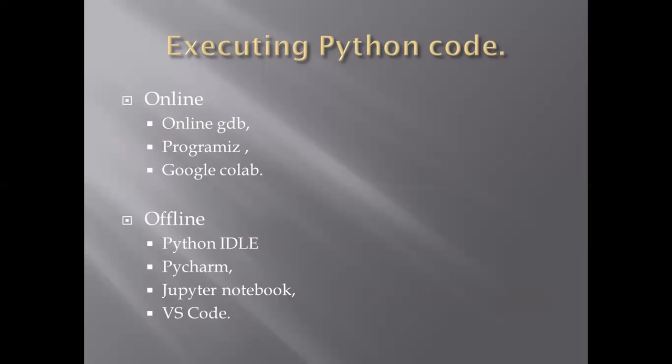For basic Python like small programming, we use Online GDB, Programiz, Python IDLE, and Jupyter Notebook. But when we are moving to complex coding we use Google Colab, PyCharm, or VS Code. VS Code is ultimately for very large scale production—it is used for web applications using Django, Flask, and similar frameworks.